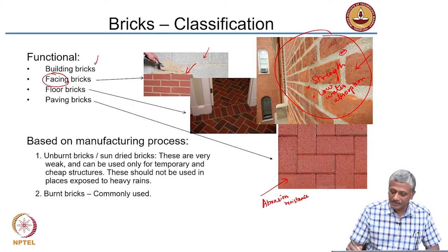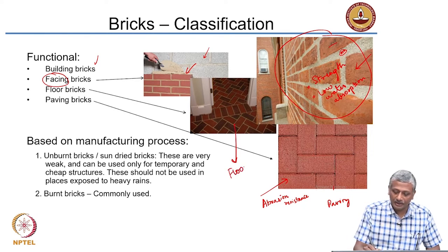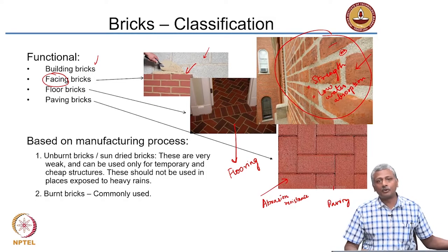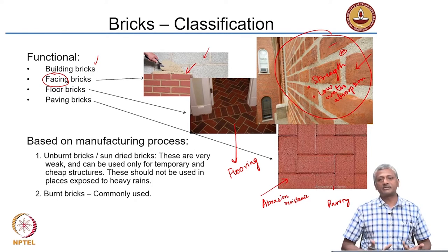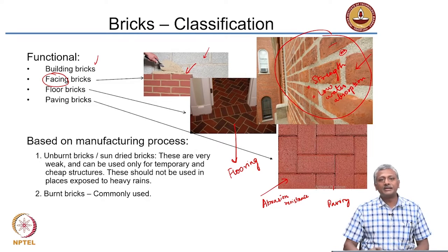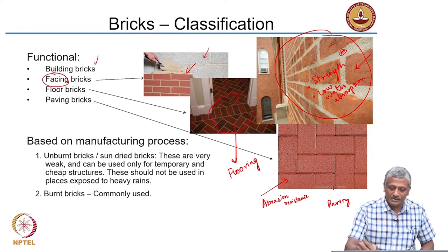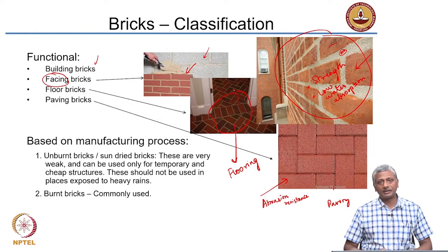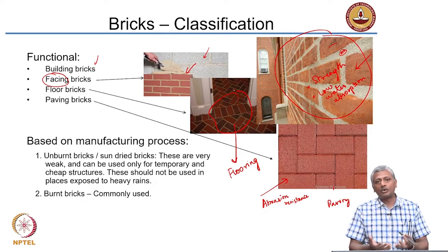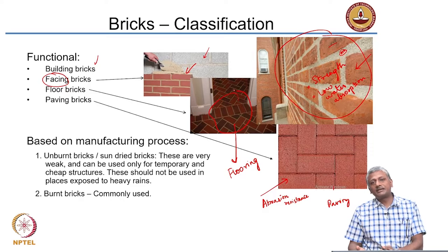There are two types: paving bricks, used in outdoor conditions, and flooring bricks, used indoors. Both are laid on the floor — when interior we call them flooring bricks, when exterior we call them paving bricks. These are designed primarily for abrasion resistance and should be strong enough to be scratch-proof, especially in the house when moving furniture. With different colors in the flooring brick, a very nice pattern can emerge. You do not really need tiles to make a good-looking floor.